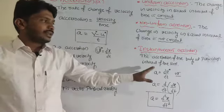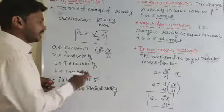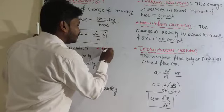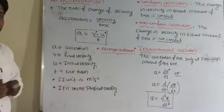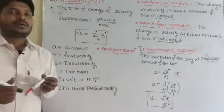Instantaneous acceleration is the acceleration of the body at a particular interval of time. One more type is average acceleration. Similar to average speed and average velocity, average acceleration is the ratio of change in velocity to the total time taken. Mathematically, average acceleration a equals (v2 minus v1) divided by (t2 minus t1).